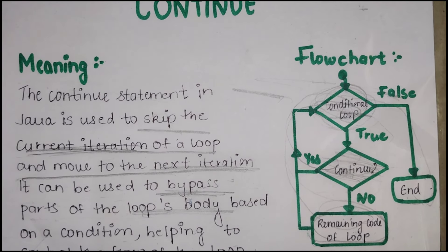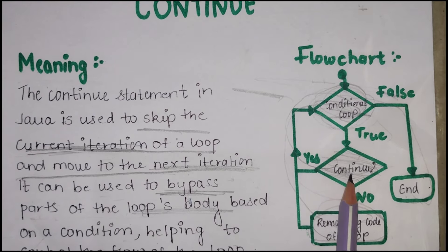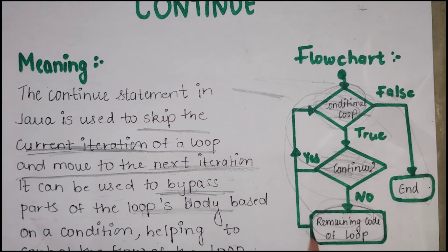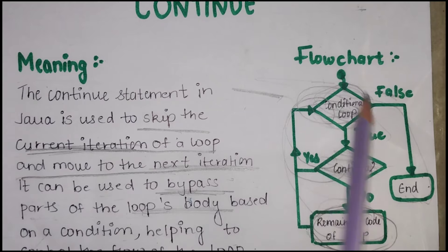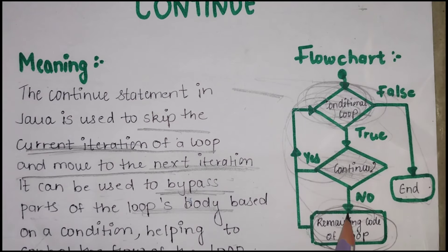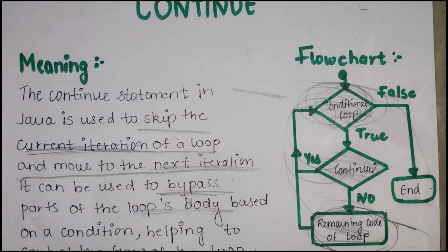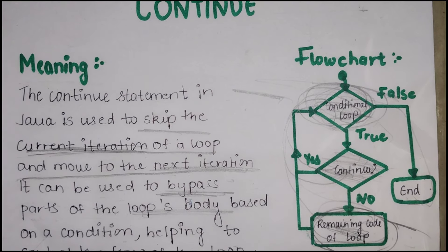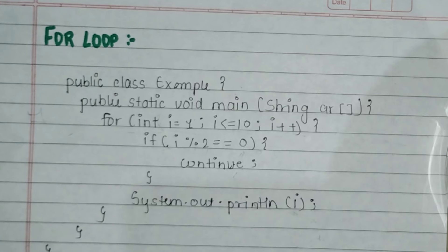This will definitely be better understood with an example. The key point is that when continue is encountered, the loop does not terminate — it just skips that specific iteration. This is different from break. Now we have seen the meaning and flowchart; let's look at the example.